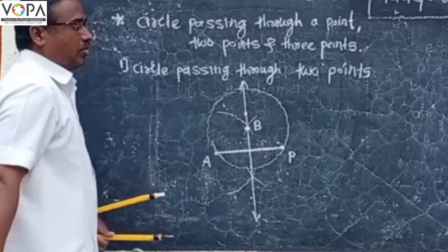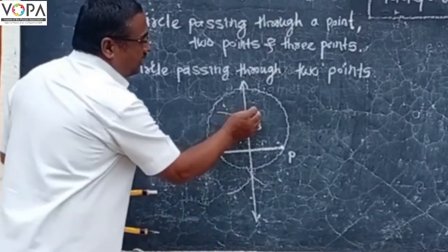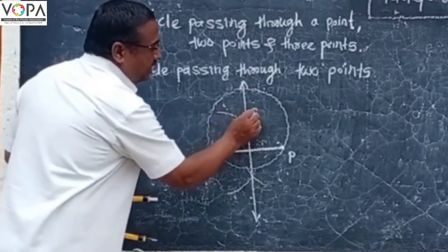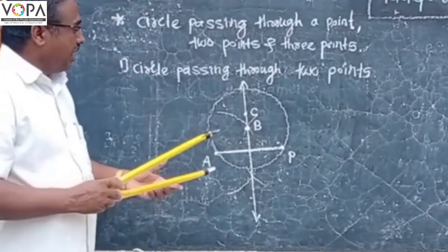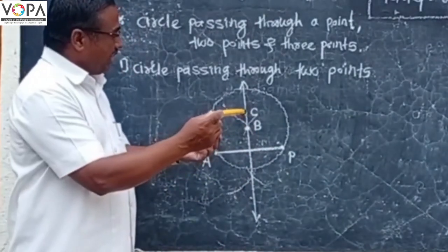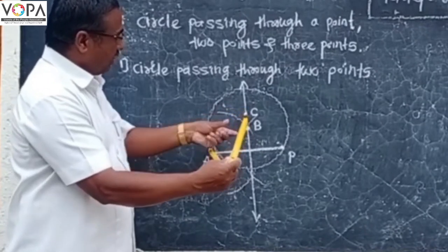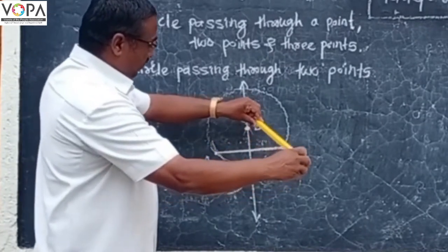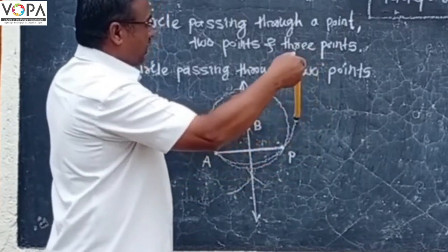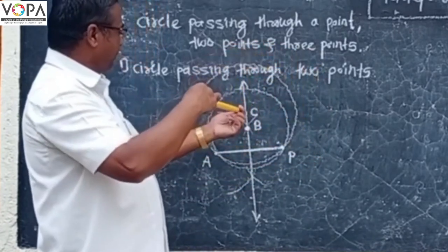To draw another circle, take center point C on the perpendicular bisector and take radius C-A. Draw a circle passing through points A and P.